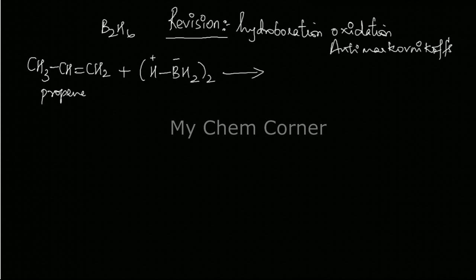When you write the structure you get CH3-CH, the double bond breaks and you get only a single bond. When writing the substituents, this will have BH2 and this will have hydrogen. This is going as per Anti-Markovnikov's rule.